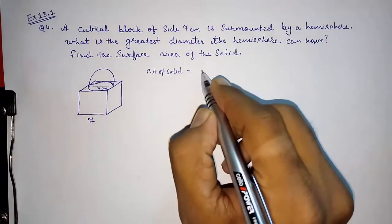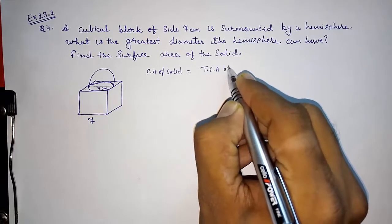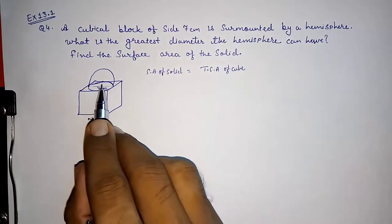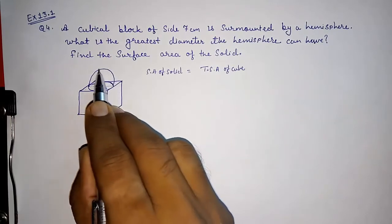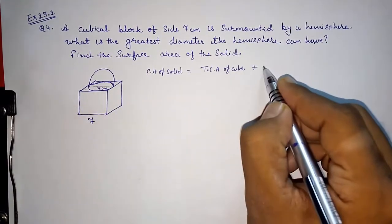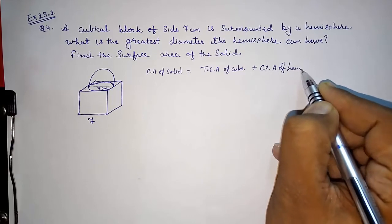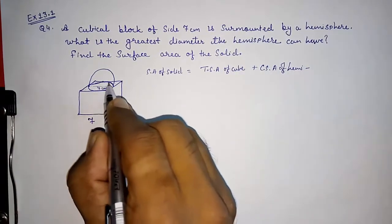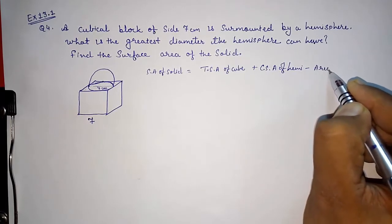So what we are going to do: first we are going to find out the total surface area of the cube, then we are going to subtract this circle and we are going to add the hemisphere, or directly I can write adding CSA of hemisphere minus this enclosed part that will be circle, so that is area of circle.